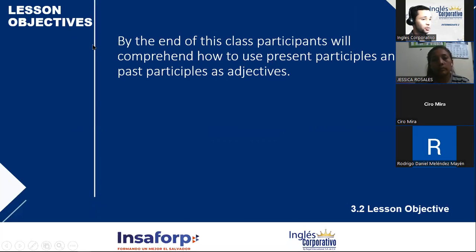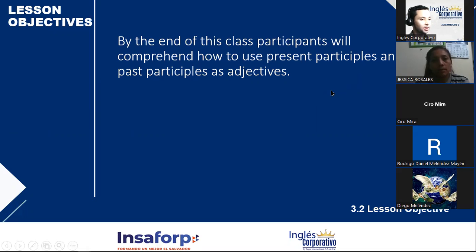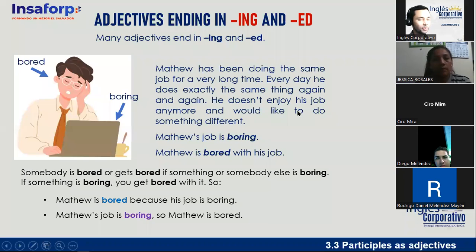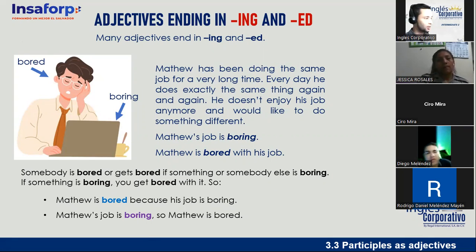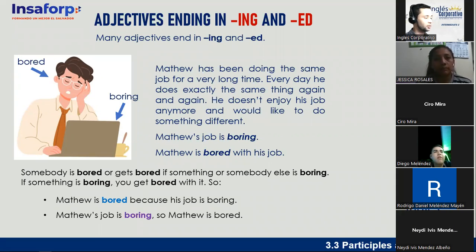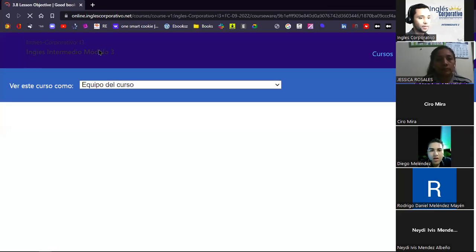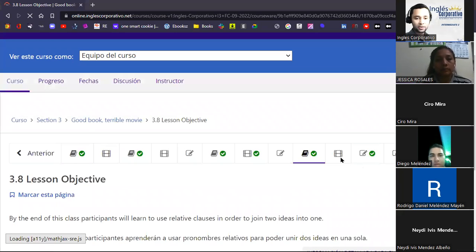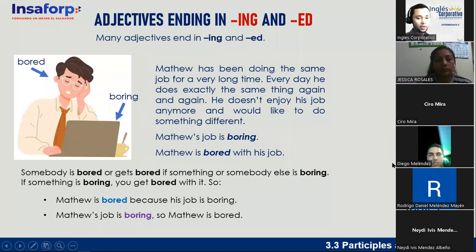Let's begin. Today we have basically two topics. The first lesson objective: by the end of this class, participants will comprehend how to use present participle and past participle as adjectives. This is not difficult — it can be a little confusing, but with practice we can do it. This is section 3.3 — participles as adjectives.